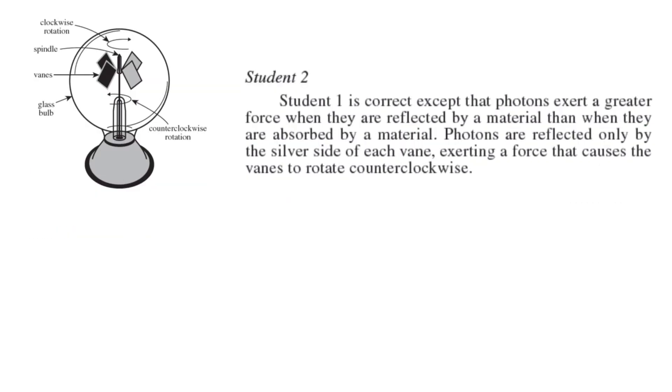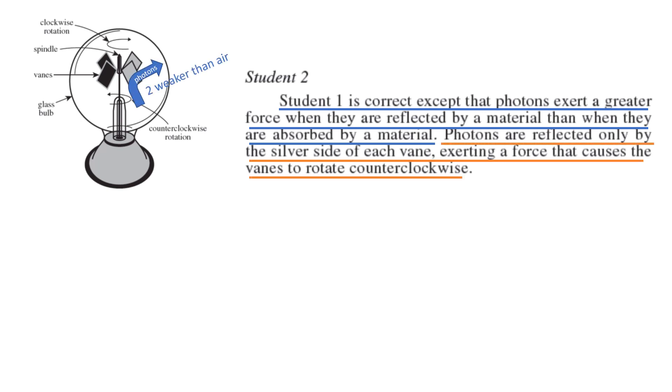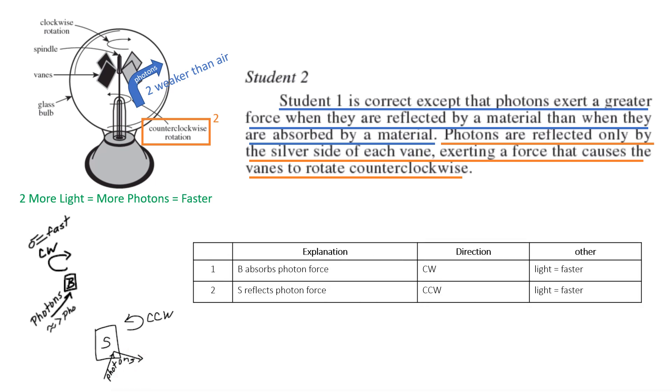Number two, student one is correct, except that photons exert a greater force than reflected when they are absorbed. So reflection, other than absorbed, they are reflected by the silver side, exerting a force that causes counterclockwise. So my drawing, they'll have more light equals more photons faster. That's the same thing. Student one is correct. And my drawing is this: silver reflected by silver counterclockwise. And I just remember that everything else in student one is correct.